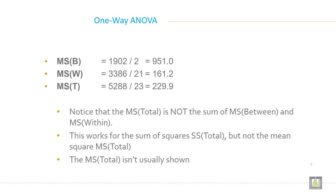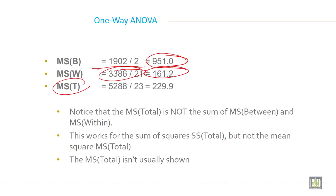So MSB equals 1902 divided by 2, which gives 951. MSW gives 161.2. And MS total equals 5288 divided by 23, which gives 229.9.